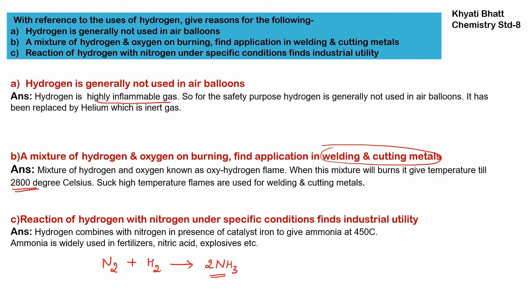It is mentioned that the reaction happens under specific conditions. This is because the reaction occurs at 400 to 500 degrees Celsius, we require 200 to 900 atmospheric pressure, and we also require a catalyst, which is iron. All these conditions are necessary for this reaction, which is why it is mentioned as under specific conditions.